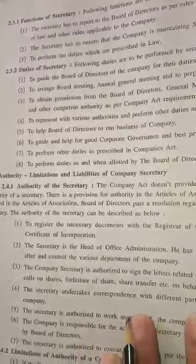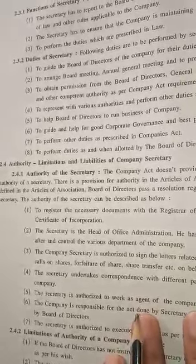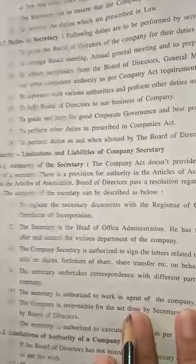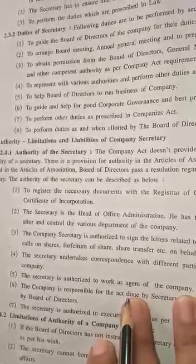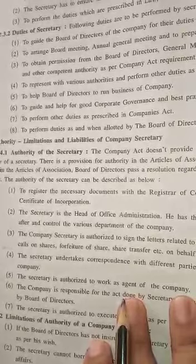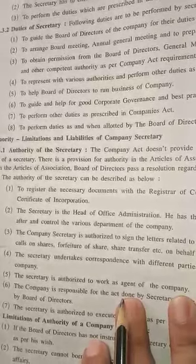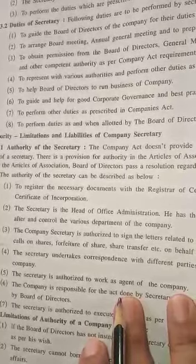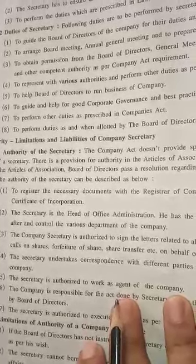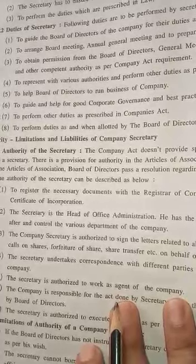Regarding the authority of the secretary: the Companies Act does not specifically provide for the authority of a secretary. There is a provision for authority in the Articles of Association. If it is not defined in the Articles of Association, the Board of Directors passes a resolution regarding the authority of the secretary.